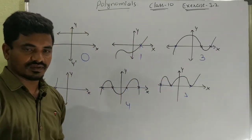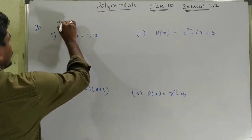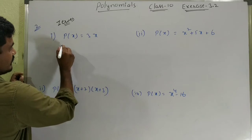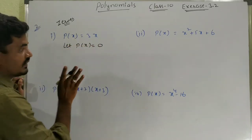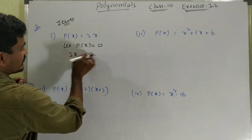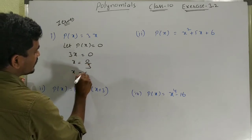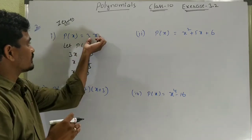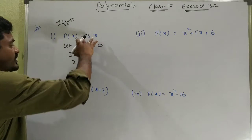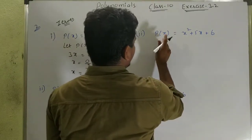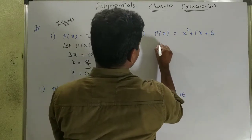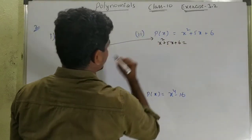Okay, we will do the first bit. The second bit is to find the zeros. So if you find the zero, here is the concept: let p(x) equal to 0. Now 3x equals 0, x equals 0 divided by 3, and this value is 0. So substitute the value — you have to find the zeros.